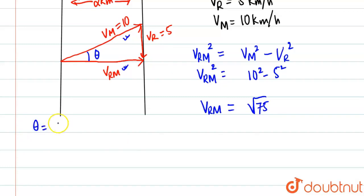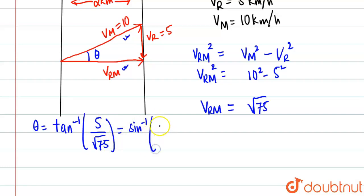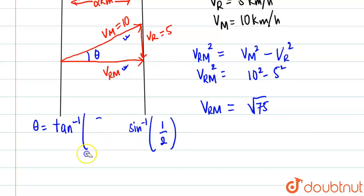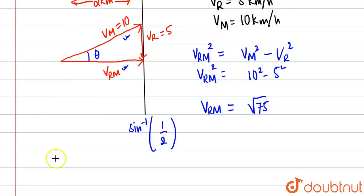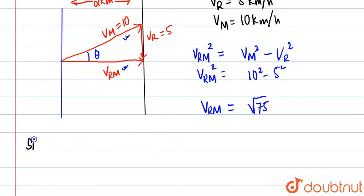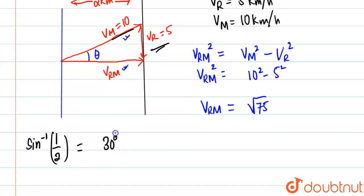The angle theta can be written as sin inverse(vr / vm) = sin inverse(5/10) = sin inverse(1/2). Since we took opposite over hypotenuse, sin inverse(1/2) gives us a very clean answer. Sin inverse(1/2) equals 30 degrees.